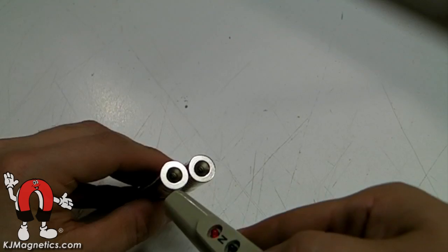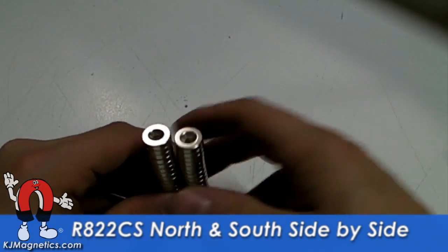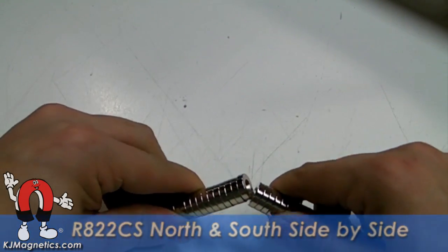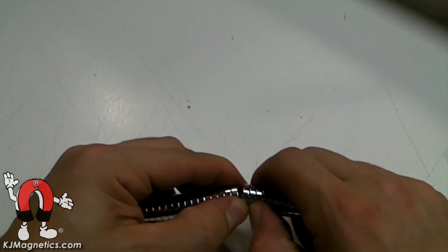As you can see, the north and south sides of the ring will attract just like any other magnet. The difference is that our countersunk magnets are designed to work together in pairs.